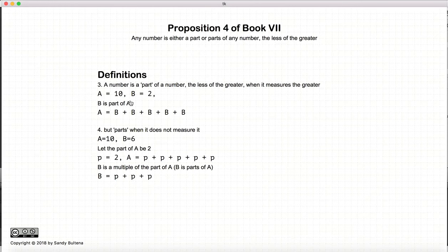Now, the definition from Euclid is a number is a part of a number, the less of the greater, when it measures the greater. So, for example, if A is 10 and B is 2, B is a part of A, because we can use B to measure A.